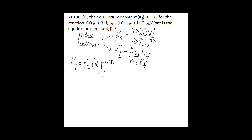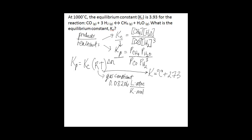A few things you need to know here: R is the gas constant, which is equal to 0.08206 liter atmospheres per Kelvin mole. And then temperature is the temperature in Kelvins. So in this problem, we're given the temperature in degrees Celsius, which means we need to convert from degrees Celsius to Kelvins. To do that, we use the equation Kelvins equals degrees Celsius plus 273. So if we add 273 to 1,000, we get 1,273 Kelvins.